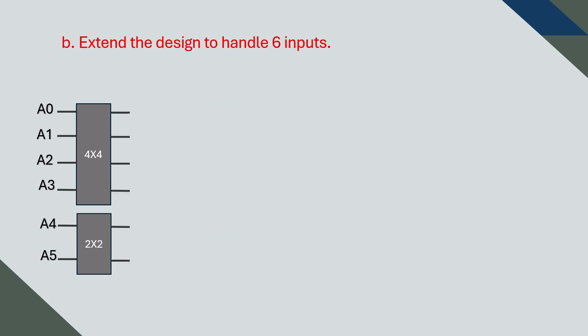Now that we have built a working four-input sorter, we can use it to help us construct a six-input sorter. To do that, we will combine it with an additional two-input sorter. This way, we can handle all six values using components we already have.